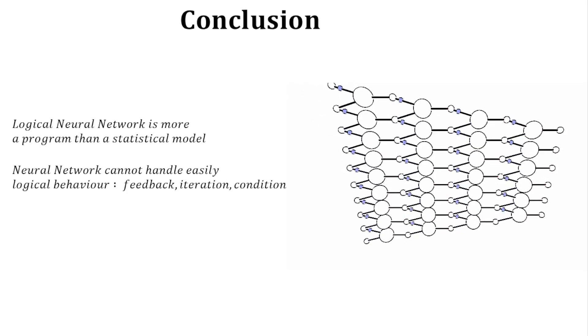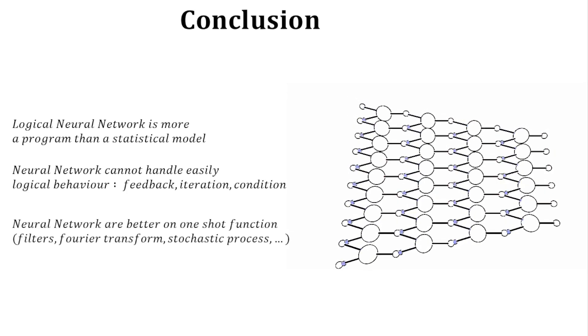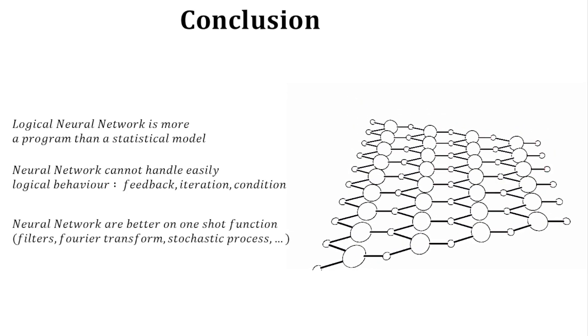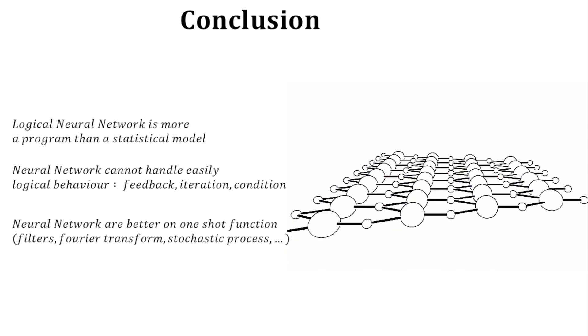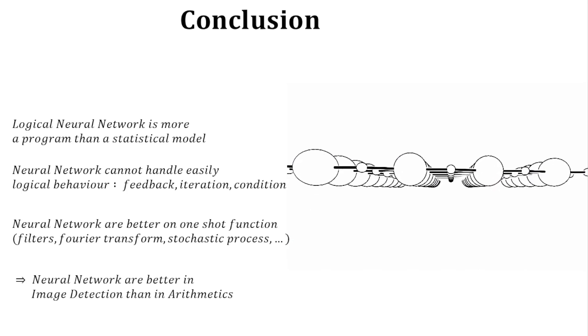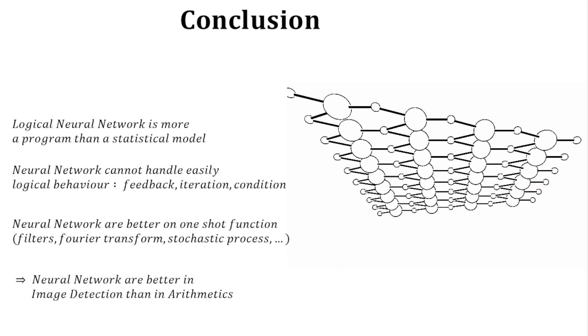Neural networks seem to approximate one-shot functions, even with complex math like filters, Fourier transforms, convolution or stochastic processes. And this is one of the reasons why neural networks are usually better in pattern recognition than in arithmetic.